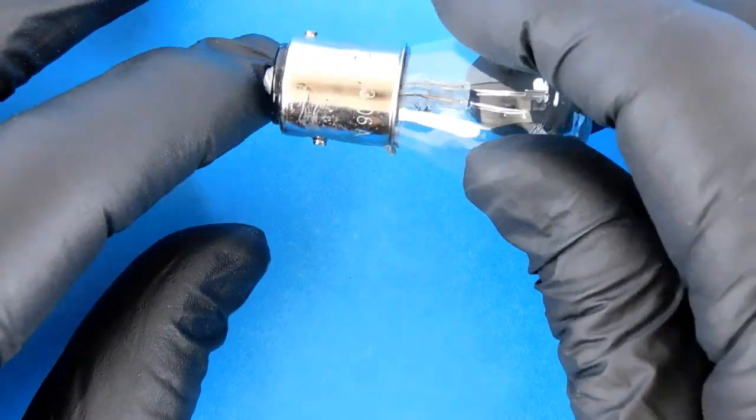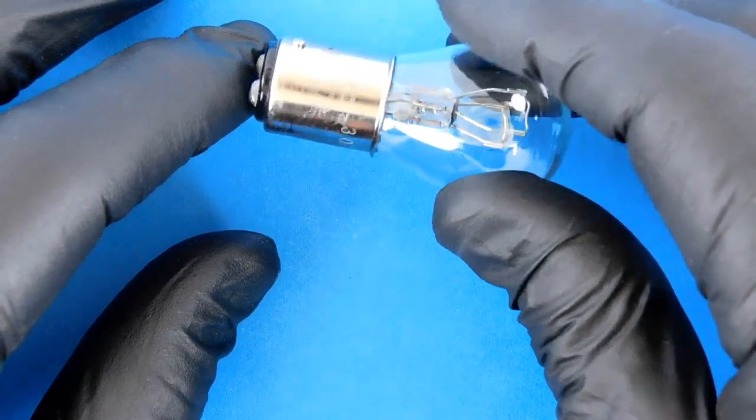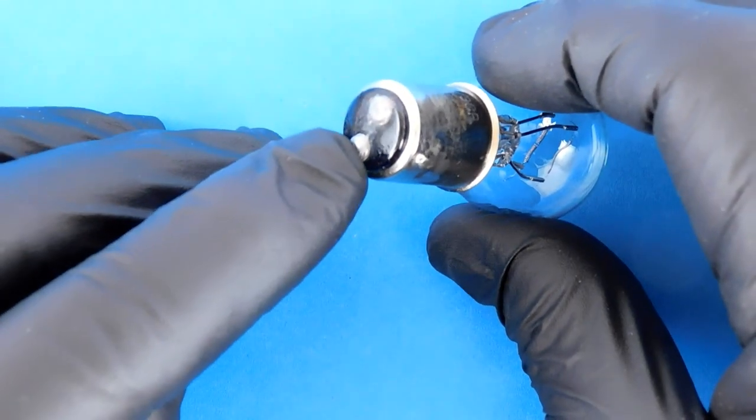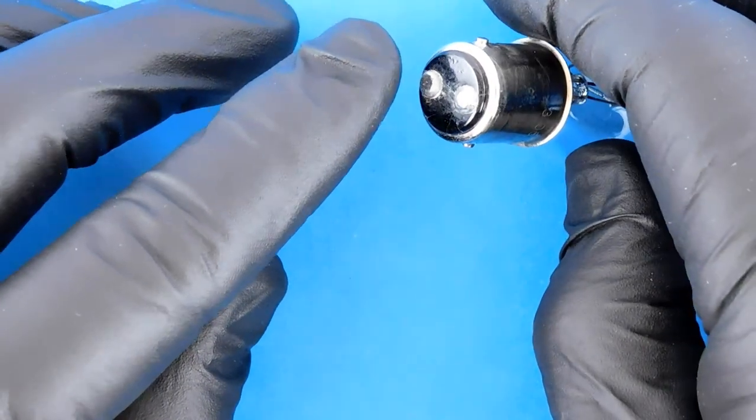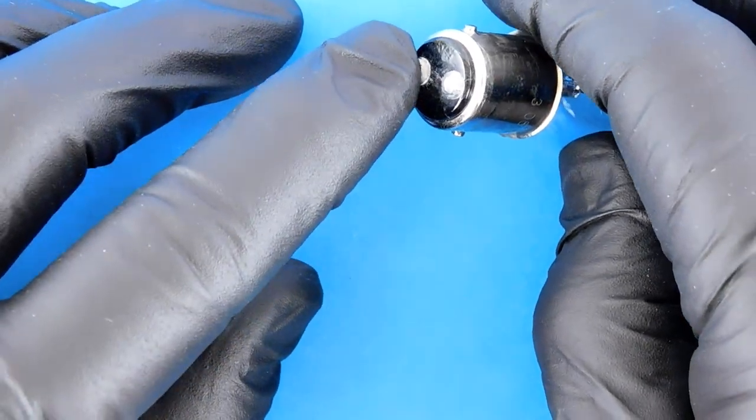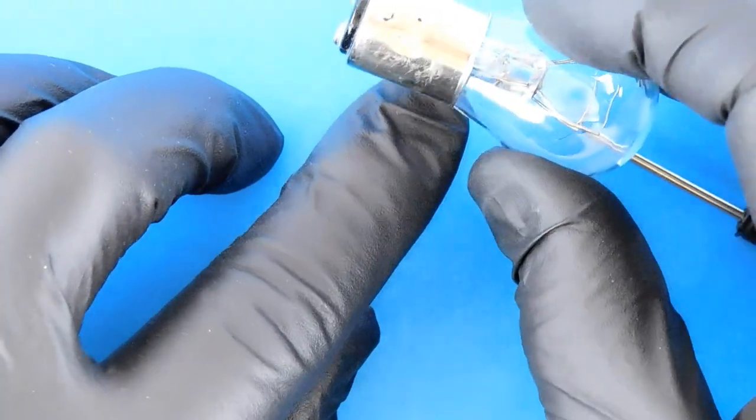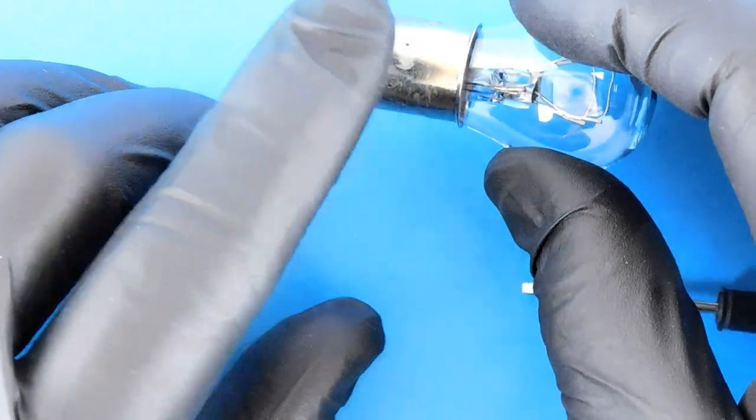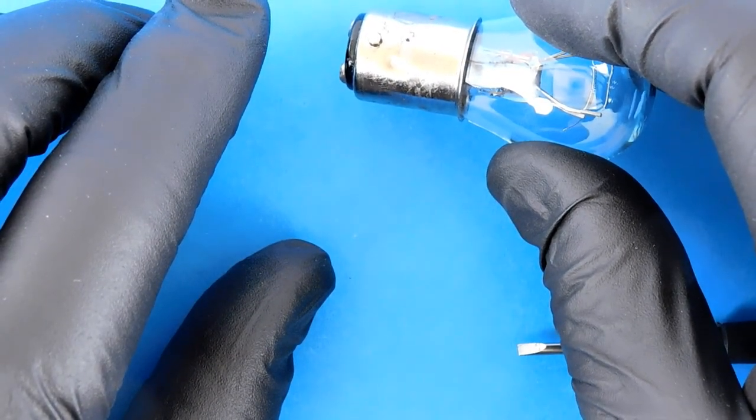This is a familiar looking base to many of you. It's called a bayonet base. There are three electrical connections. One for 12 volt DC to the large coiled filament, another one for 12 volt DC to the small coiled filament, and one, which is this entire metal enclosure, is for a common ground. By common ground, I mean that one ground is used for both filaments.